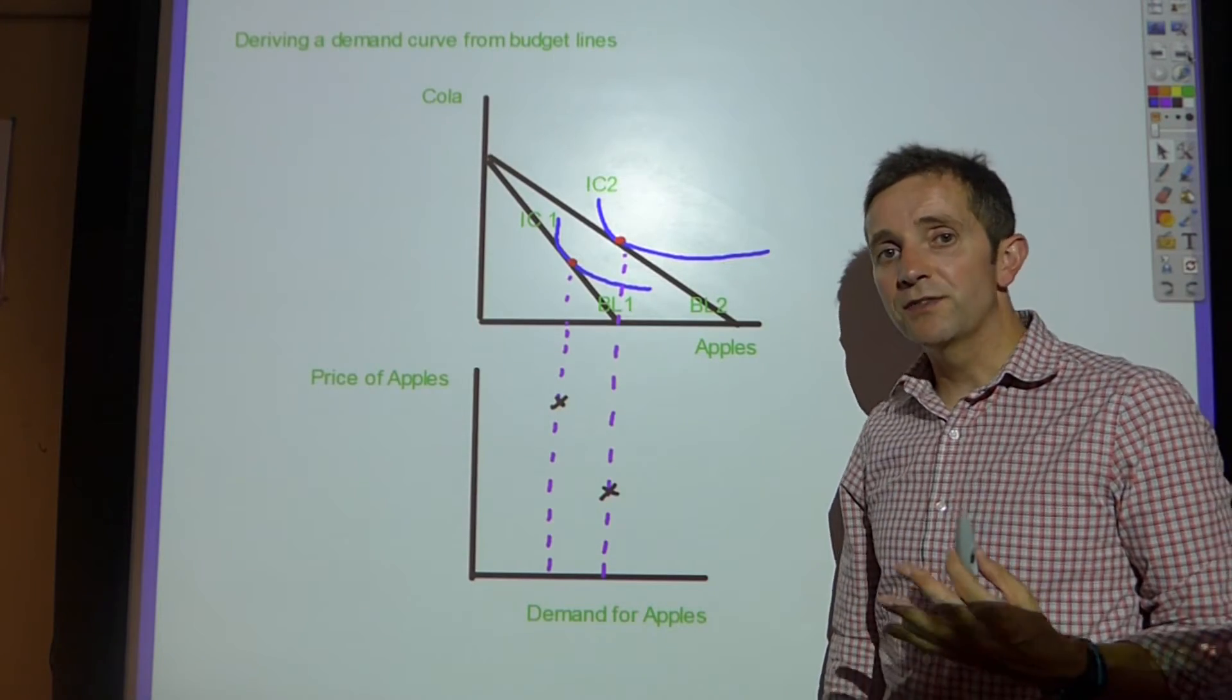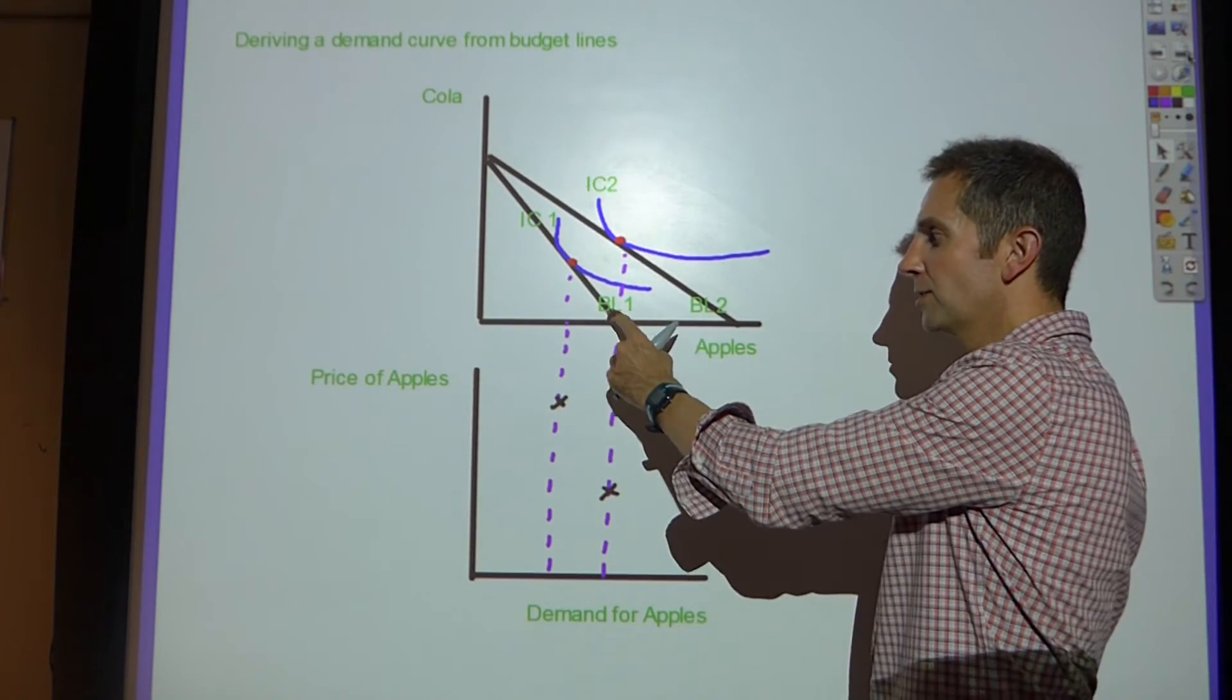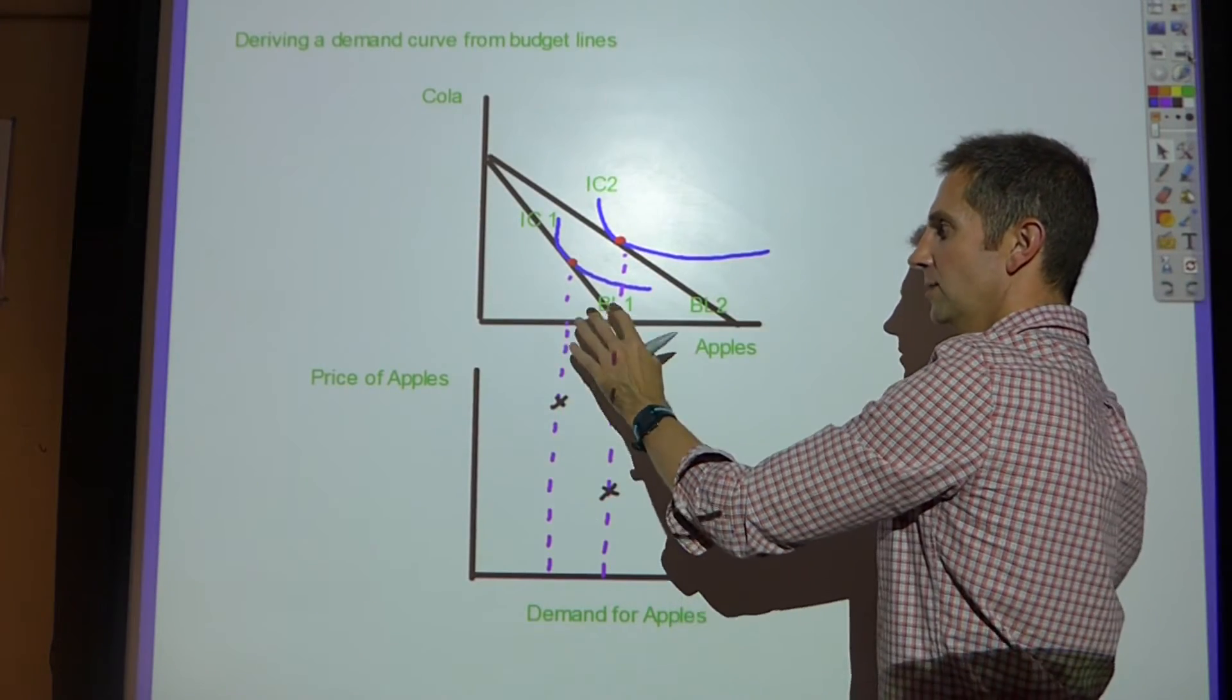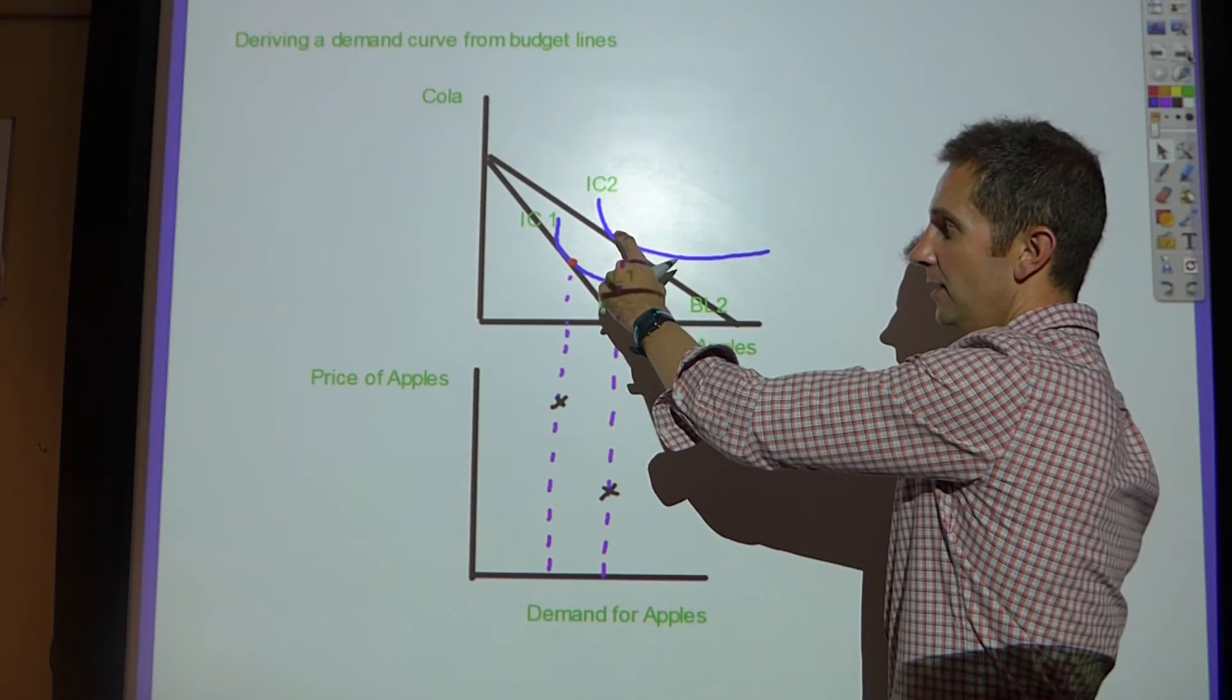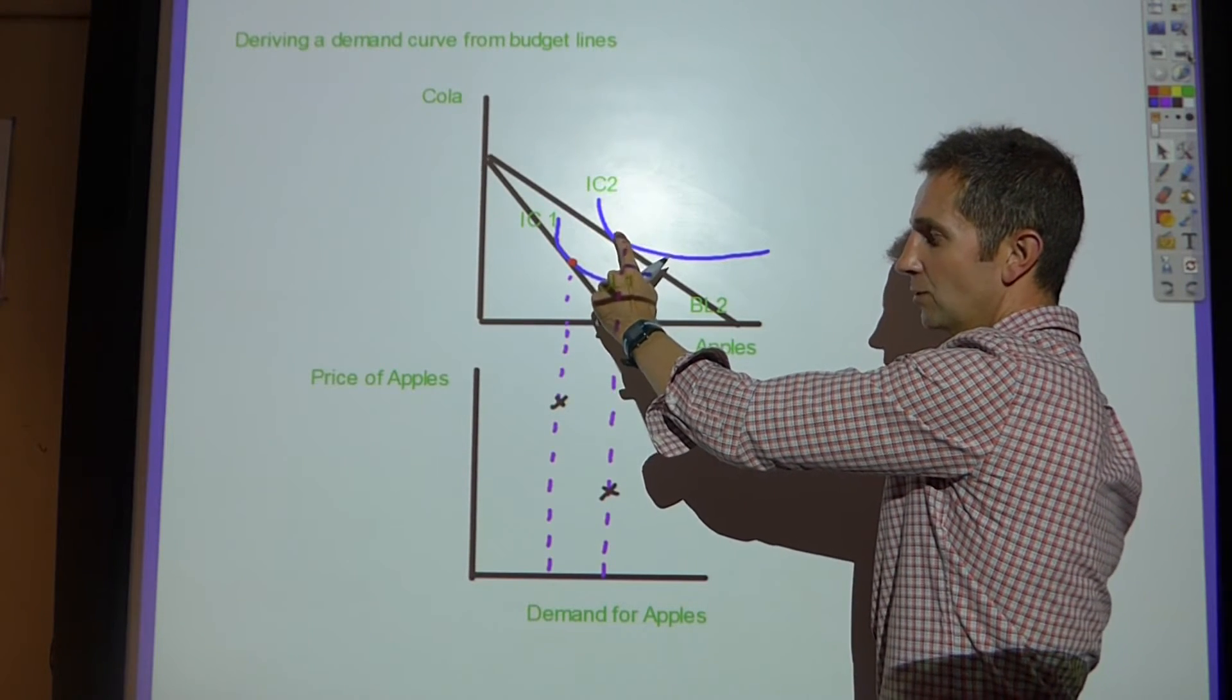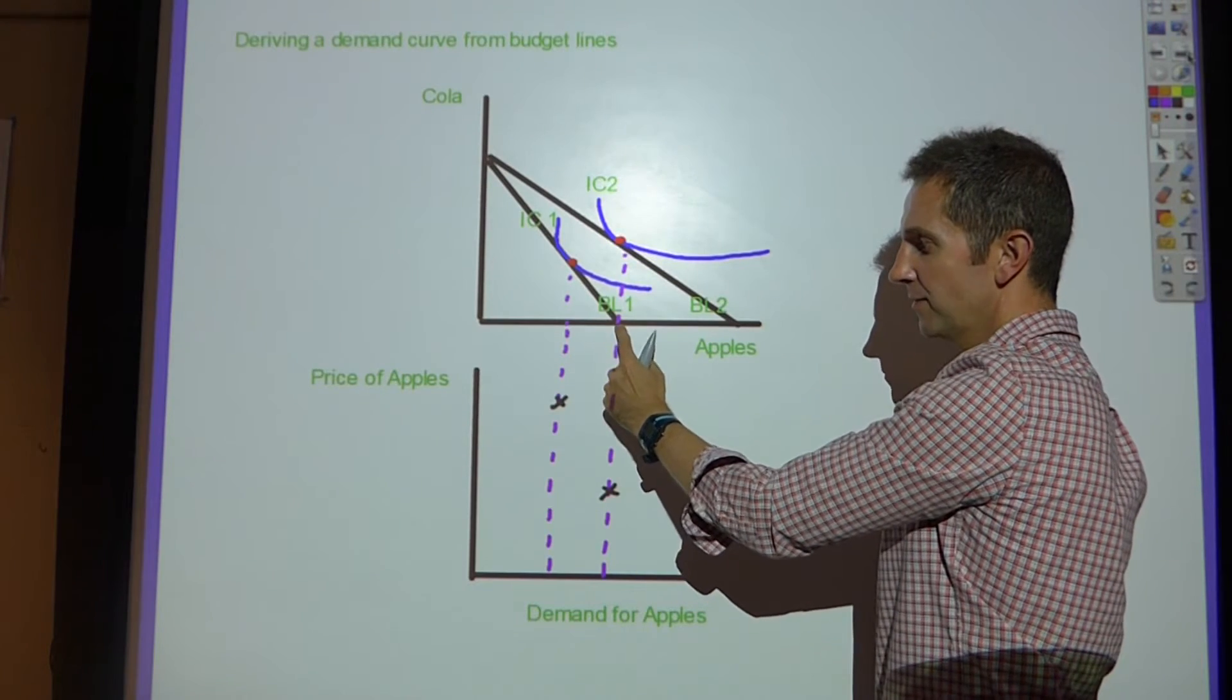We then know that the price of apples falls. How do we know that? Because the budget line pivots around this point and it pivots to the right. So the budget line pivots, the consumption point moves to here, and consequently we're consuming this amount of apples.